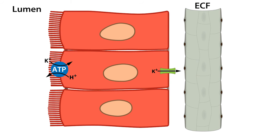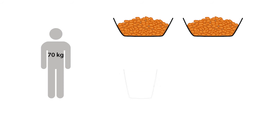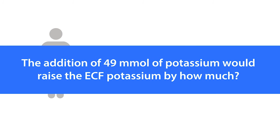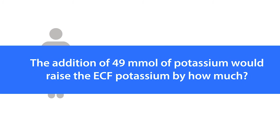Now that we know where and how potassium is absorbed along the GI tract, let's address the following problem. An adult male weighing 70 kilograms eats two cups of whole grain cereal, one cup of milk, and a banana for breakfast. He'll have ingested approximately 49 millimoles of potassium. The addition of 49 millimoles of potassium would raise the extracellular fluid potassium by how much?